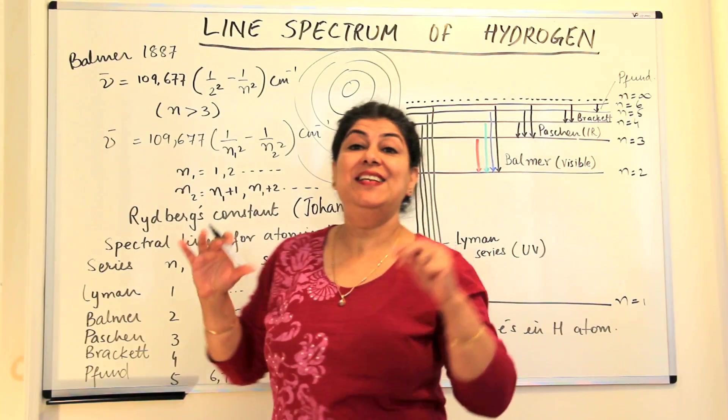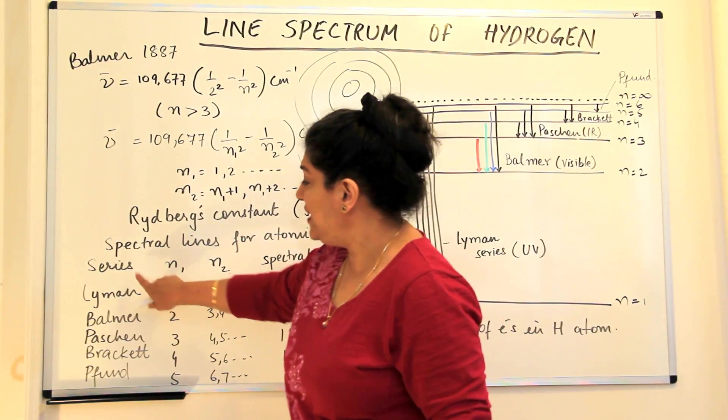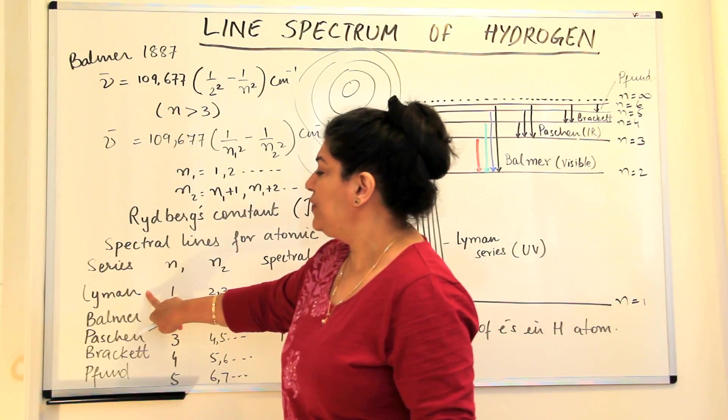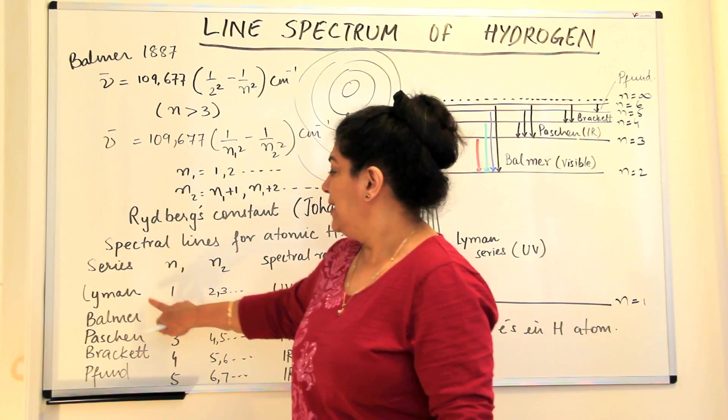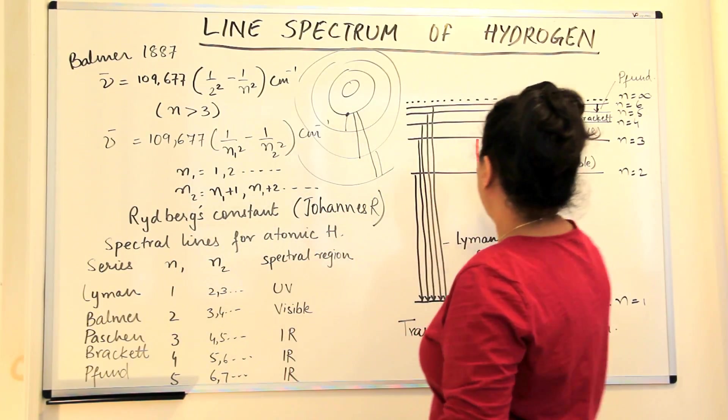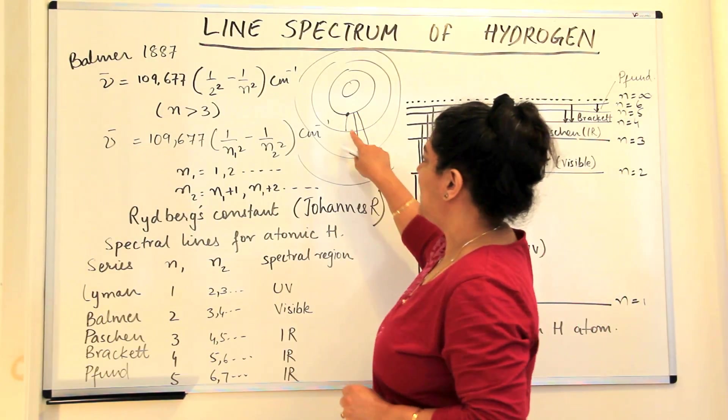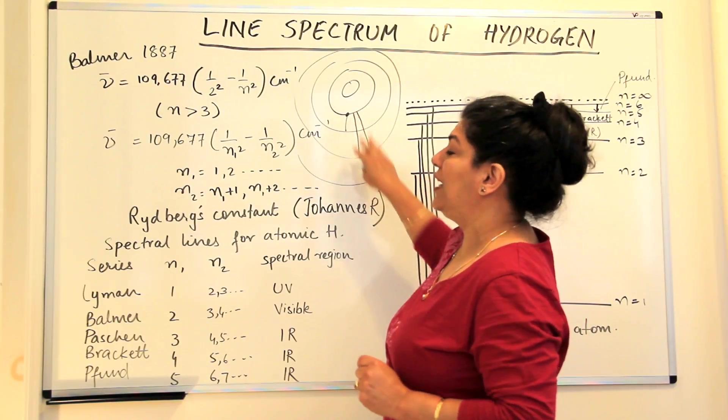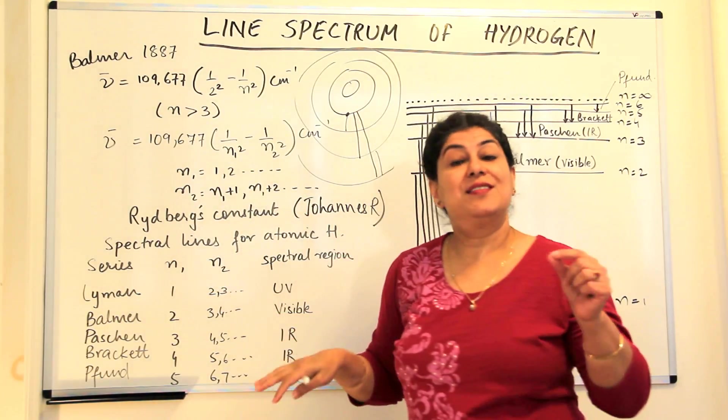So what were these series known as? The series were five of them in the case of hydrogen. The first one was the Lyman series. The Lyman series was where the electron was in the first shell, it moved up to the second, third, fourth, and when the electrons returned, the energy they gave out formed the Lyman series.